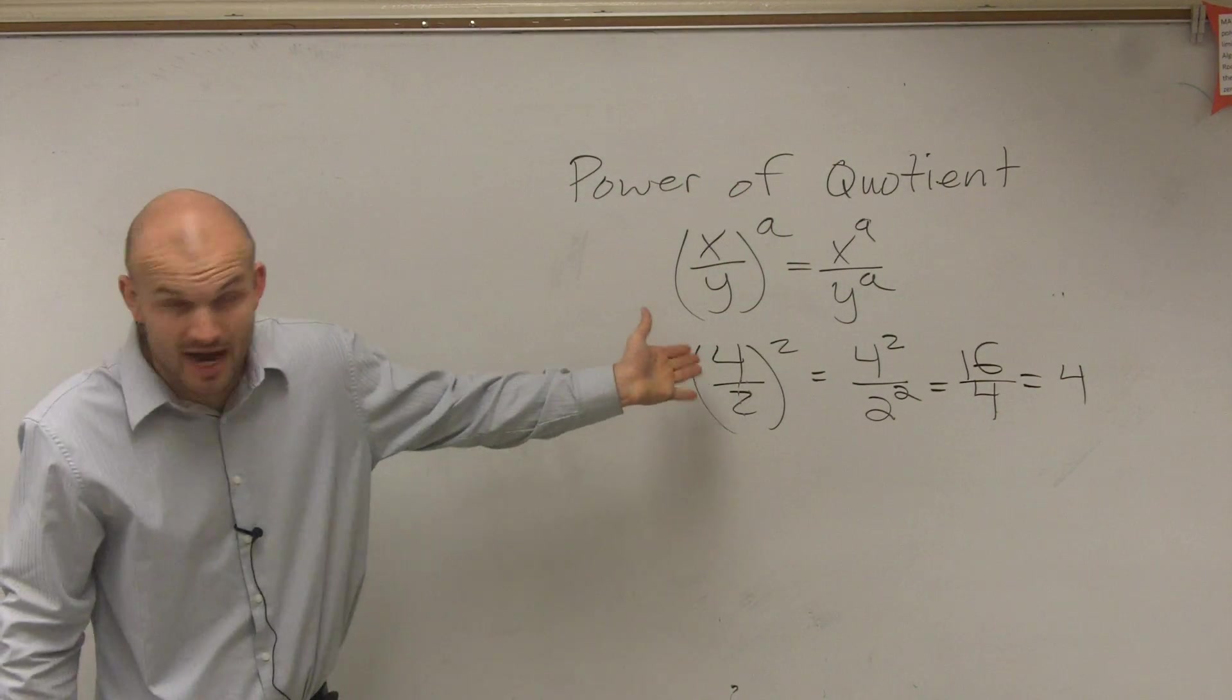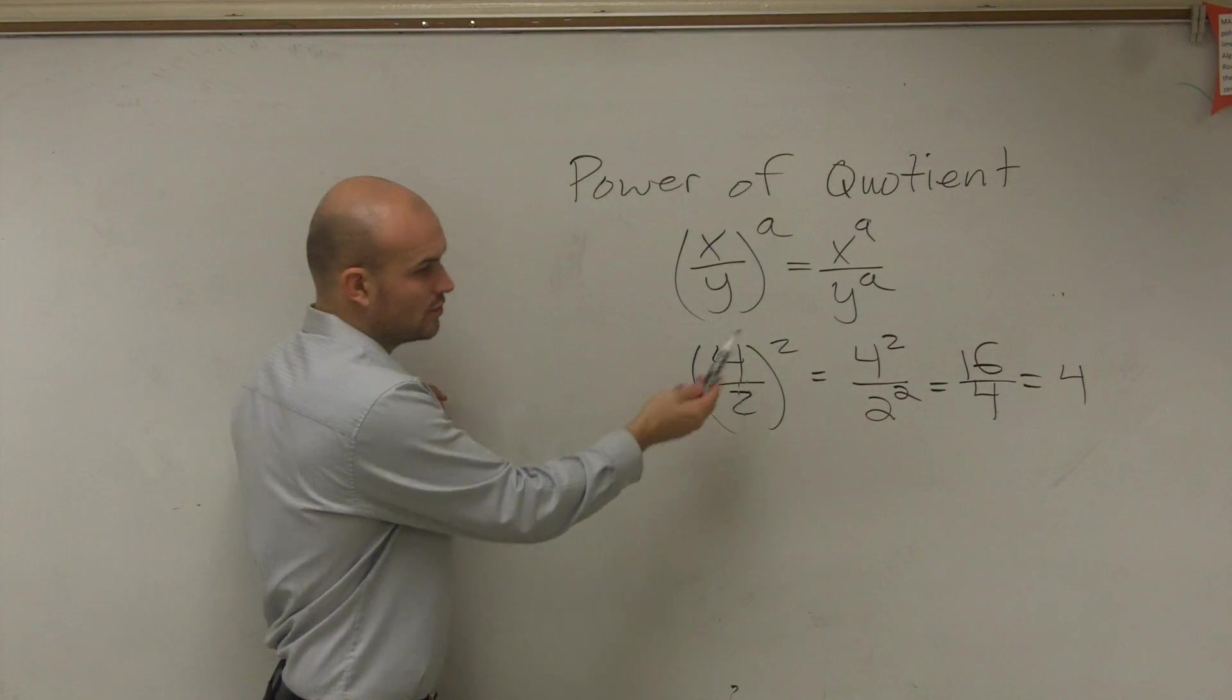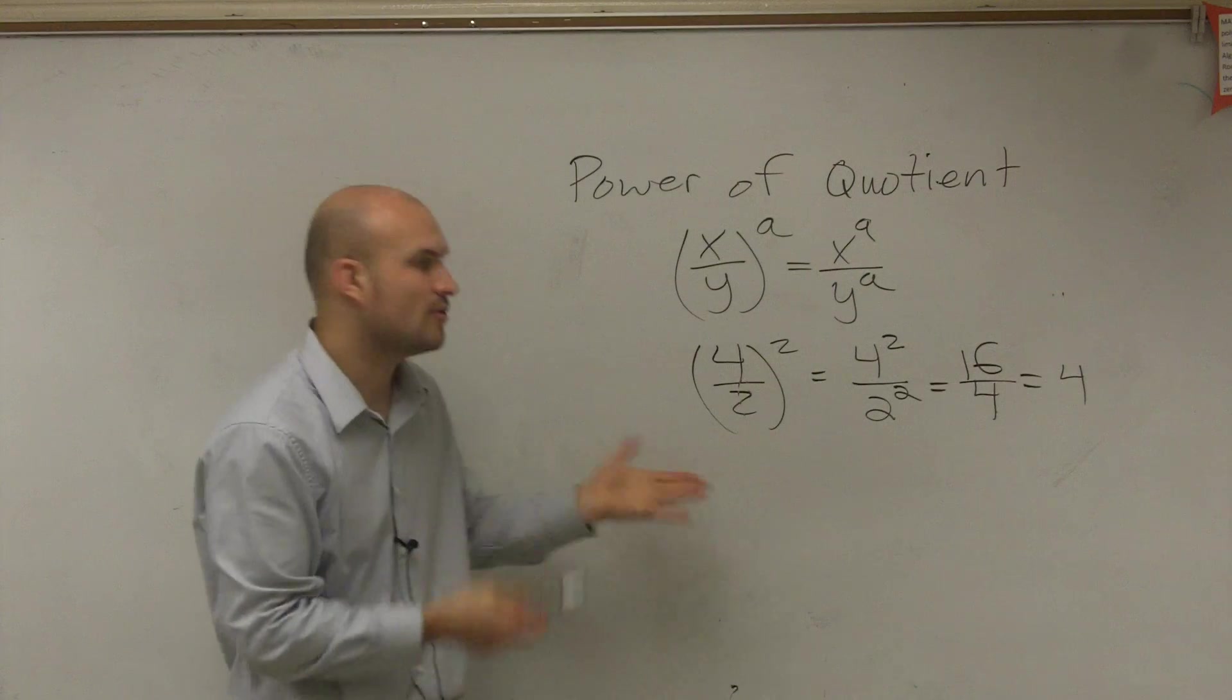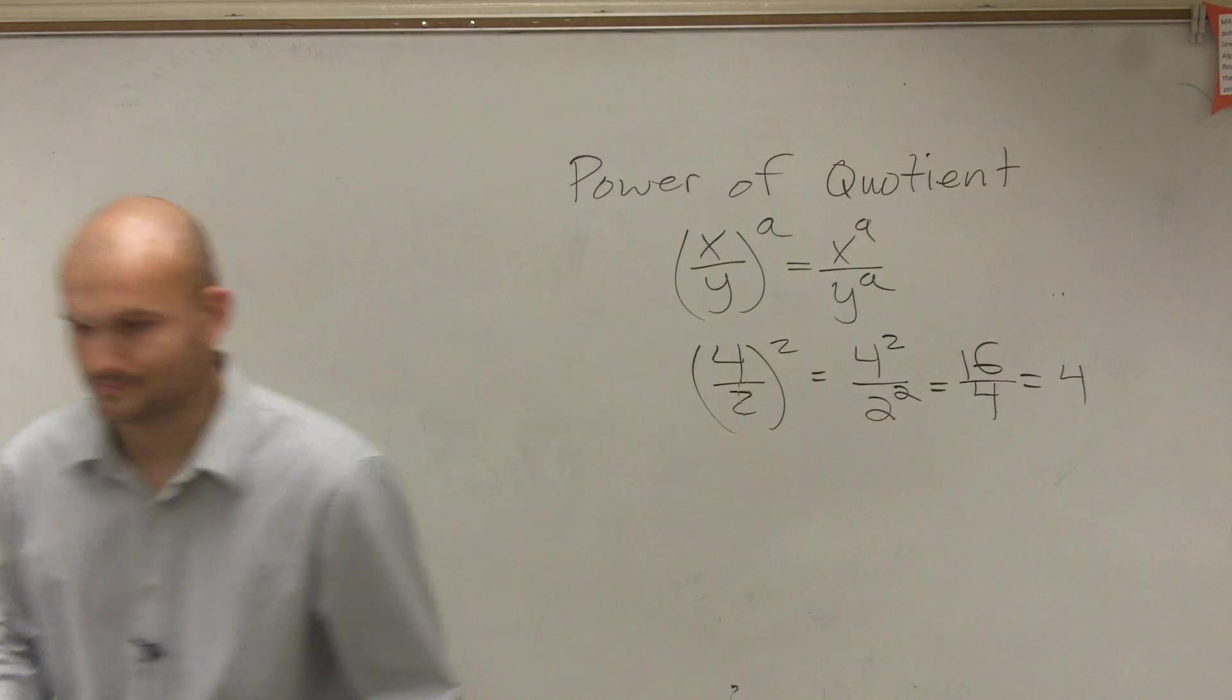And you also could have, now a lot of times you can't simplify on the inside, but let's see if that works. Four divided by two is two. Two squared is four. So you guys see how it still makes mathematical sense? Yes. Very good. Thank you.